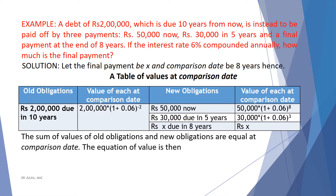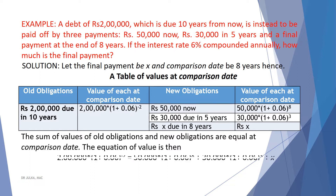The sum of values of old obligation and new obligations are equal at comparison date. The equation of value is then: 2,00,000 multiplied by 1.06 raised to the power minus 2 equals 50,000 multiplied by 1.06 raised to the power 8, plus 30,000 multiplied by 1.06 raised to the power 3, plus x.